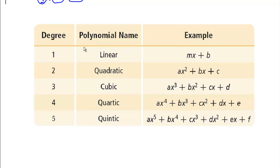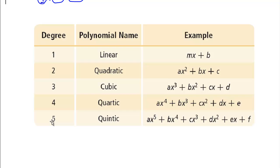Next in your notes there is a chart of different polynomials that we give special names to. A first-degree polynomial is linear, second degree is quadratic — both of which we've spent quite a bit of time on. Then third, fourth, and fifth degree are cubic, quartic, and quintic. You can notice the general form for each one. A quintic has coefficients A, B, C, D, E, and F — six total. In general, whatever the degree of the polynomial is, there will be that number plus one coefficients associated with that polynomial.